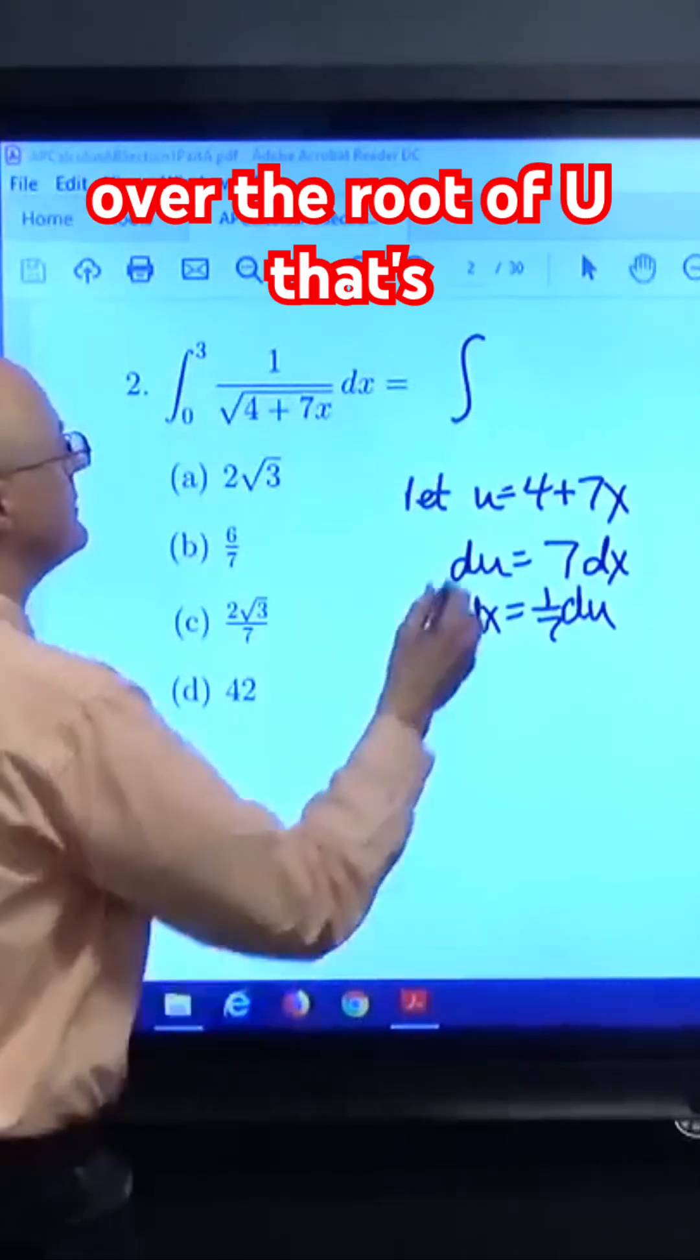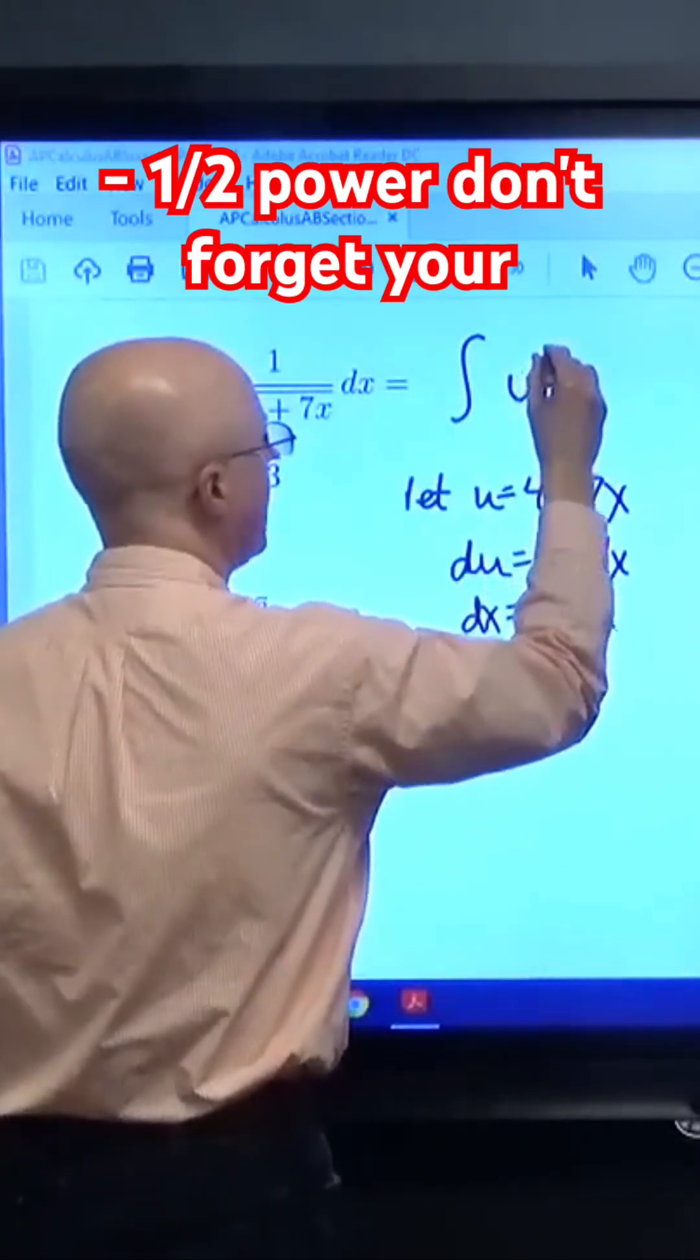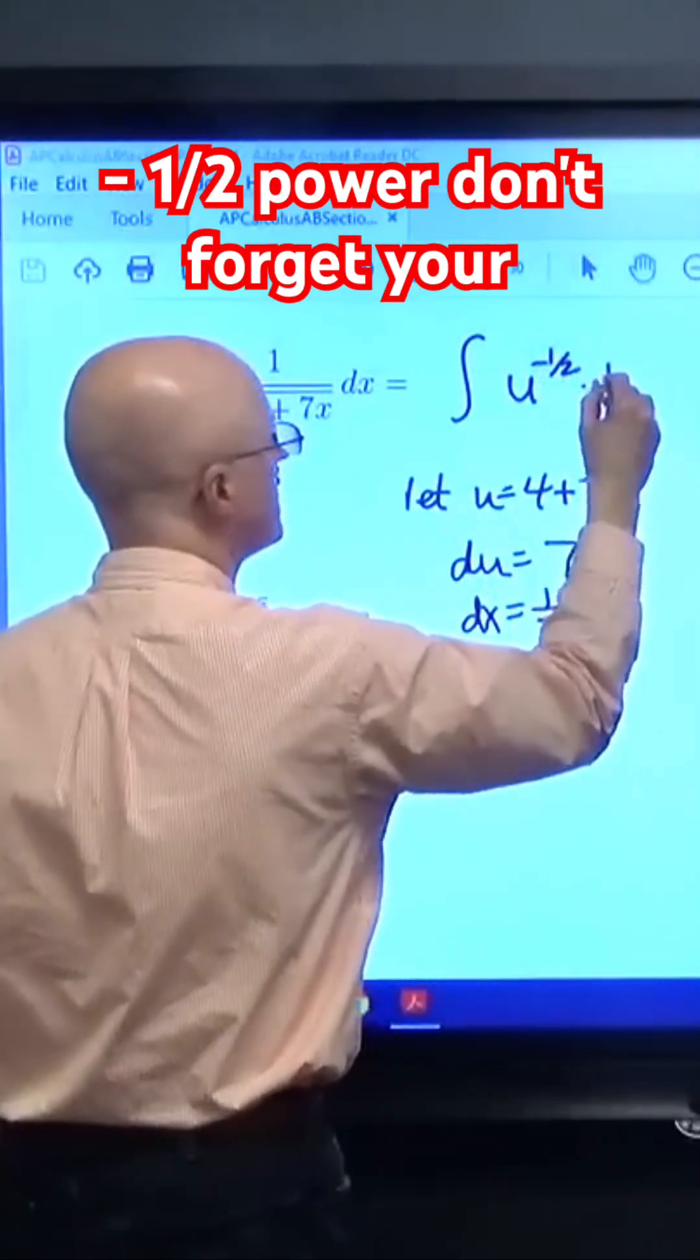We've got 1 over the square root of u. That's the same as u to the negative 1/2 power. Don't forget your 1/7th.